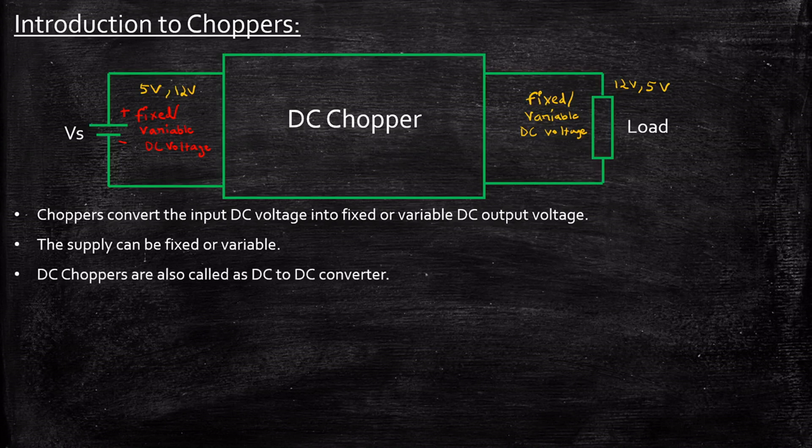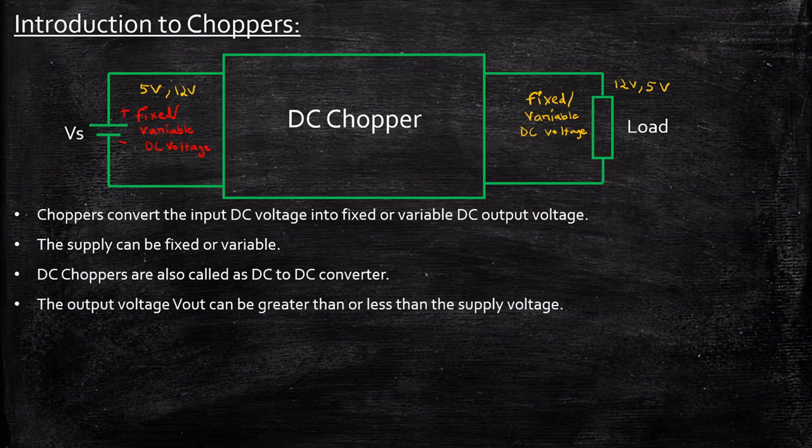Choppers convert the input DC voltage into fixed or variable DC output voltage. The supply can be fixed or variable. The DC choppers are also called as DC to DC converters. So in general, we call these as DC to DC converters in industrial and commercial applications. The output voltage Vout can be greater than or less than the supply voltage.